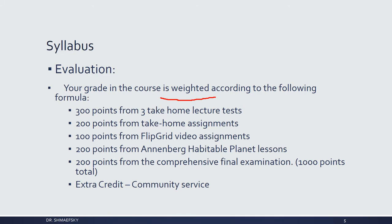Looking at this from a total number of points — use this as a reference, and I will provide you with a grade average upon your request. 300 points will be from three take-home lecture exams. You'll take these at home, and I'll show you how to use the answer sheet. 200 points would be from take-home assignments, and you'll be getting these at least once a week, sometimes two a week depending on the assignment. These will be anything from at-home labs to case studies to small research projects — not big, but these will reinforce the content.